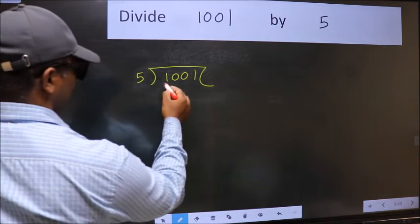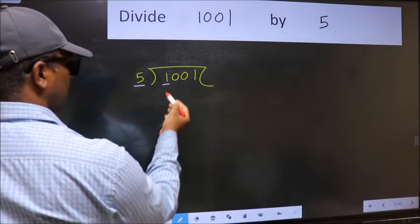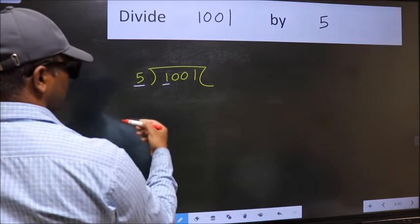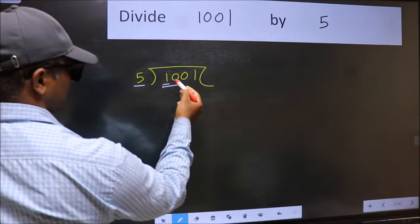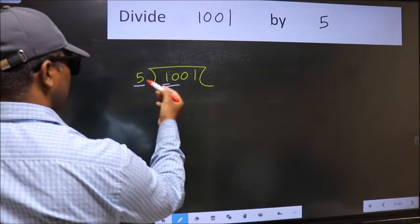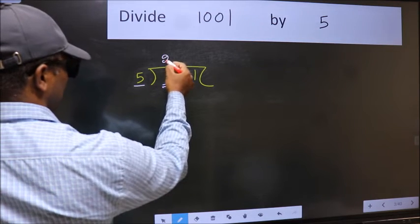Here we have 1 and here 5. 1 is smaller than 5. So we should take two numbers, 10. When do we get 10 in 5 table? 5 times 2 is 10.